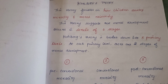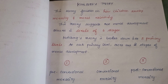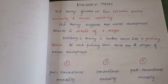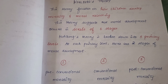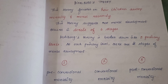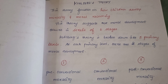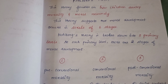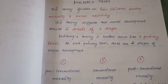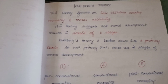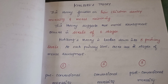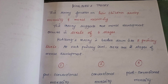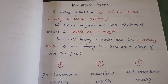This is a very important topic in professional ethics and engineering, which is in unit 2. The title is Kohlberg's theory. This theory addresses how a child's morality and moral reasoning skills develop. Kohlberg's theory suggests that moral development happens in a series of 6 stages.